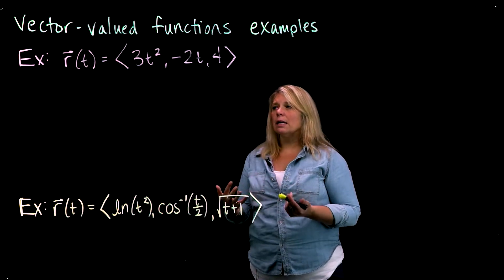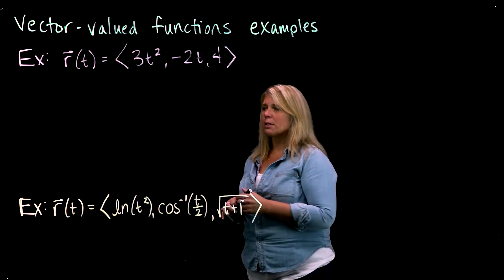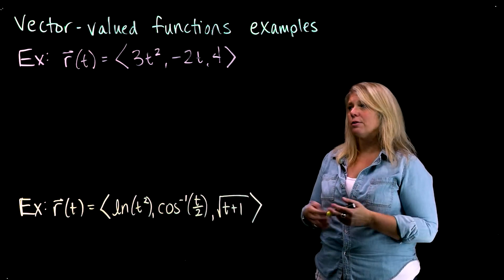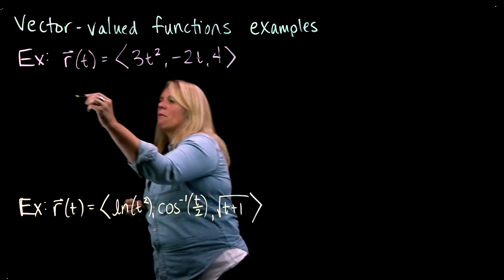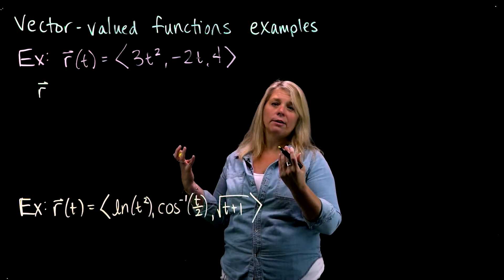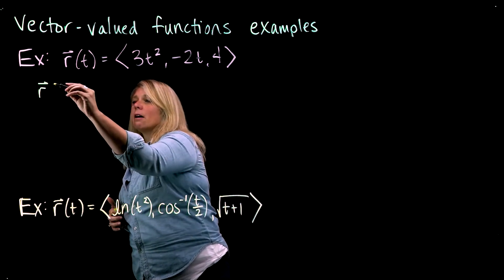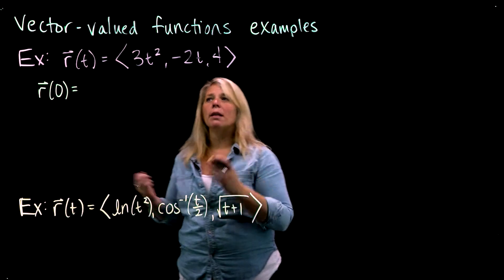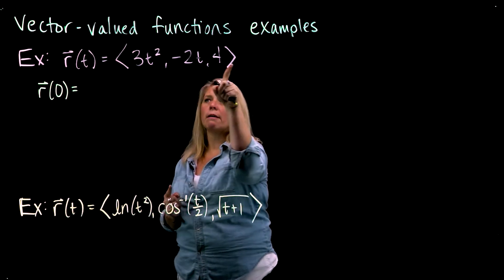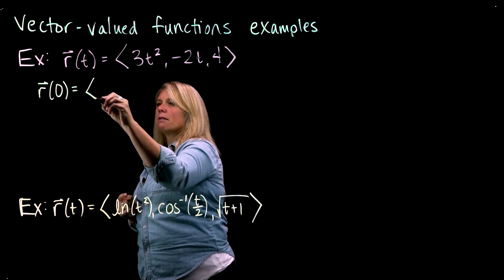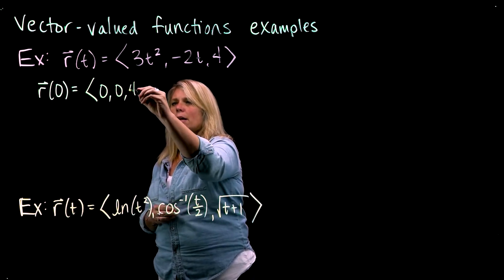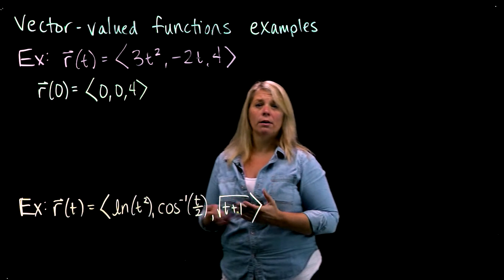Let's think about some inputs and outputs, and evaluate this first vector-valued function at some different values of t. A good number to try to plug in for any vector-valued function, if you can, is 0. When we plug in 0, we put t equals 0 everywhere we see it. So we have 3 times 0 squared, which is 0, and negative 2 times 0, which is 0. And that last component is always going to be 4 no matter what t is.